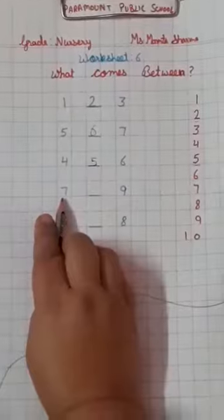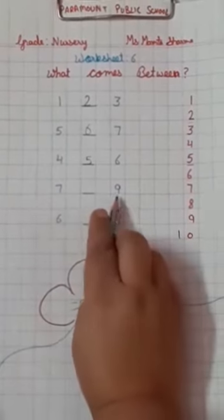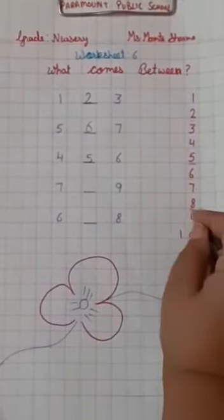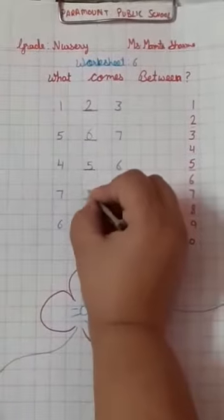What is this? 7. 7. And what is this? 9. What comes between 7 and 9? See, 8. Write here, 8.